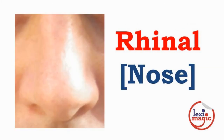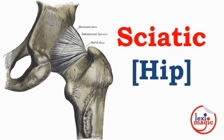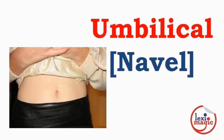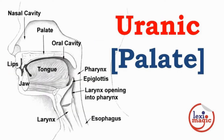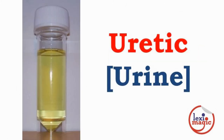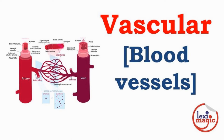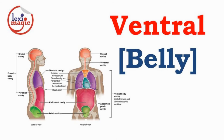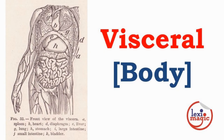Rhinol refers to the nose. Schiatic refers to the hip. Splenic refers to the spleen. Umbilical refers to the navel. Uranic refers to the palate. Uretic refers to urine. Vascular refers to blood cells. Venus refers to veins. Ventral refers to the belly. Visceral refers to the body as a whole.